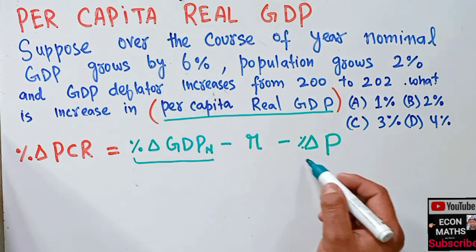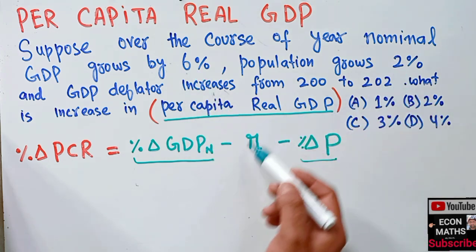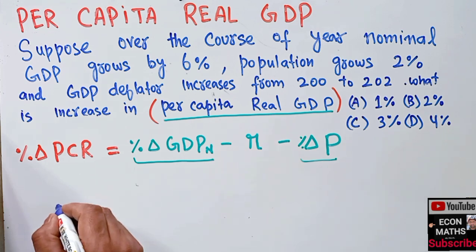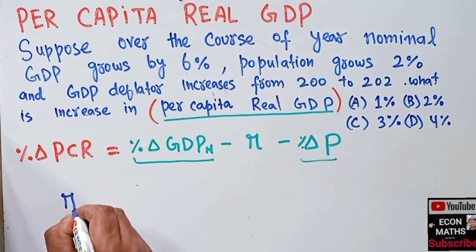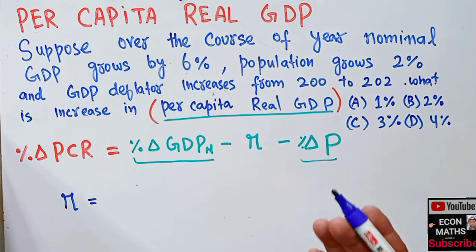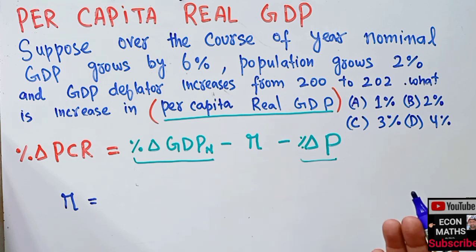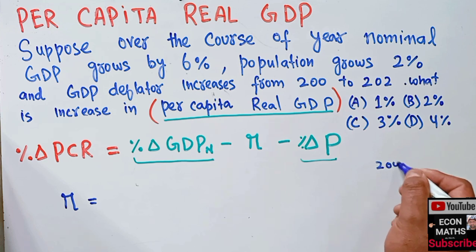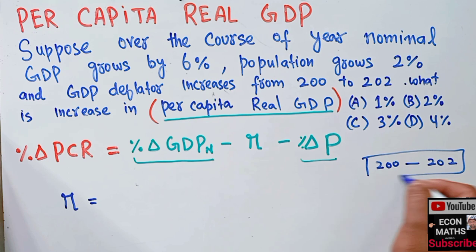Nominal GDP growth rate is given as 6% and population growth rate is given as 2%, but we need to calculate the inflation rate first. The inflation rate can be calculated from the GDP deflator — that means we need the percentage change in the GDP deflator.